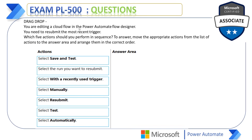Let us go back to the question. You are editing a Cloud Flow in the Power Automate Flow Designer and you need to resubmit the most recent trigger — which five actions should you perform in sequence? This question was asked previously, so it refers to the old Power Automate Flow Designer. For the old designer, the first action is to select Test. You may ask why not select Save and Test — because that is a single combined button. So the first step is select Test, and the second step is select Automatically, not manually.